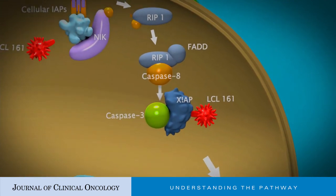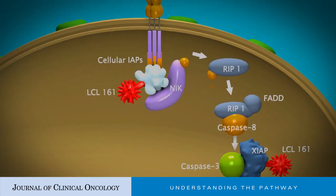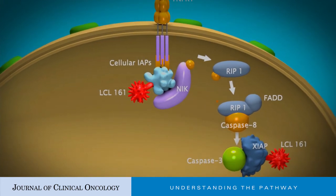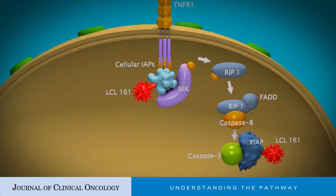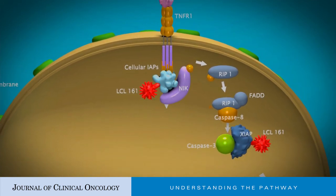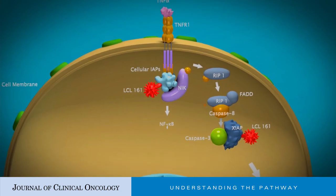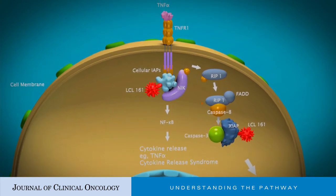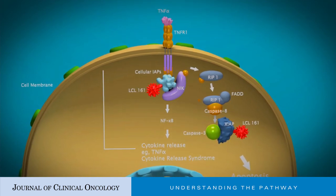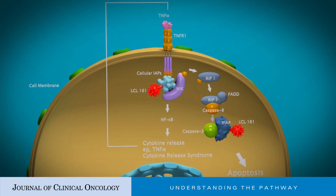In addition, LCL-161 binds to cellular IAP proteins, thereby enhancing their E3-ligase activity, auto-ubiquitination, and proteasomal degradation, which in turn leads to activation of non-canonical nuclear factor kappa-B signaling, upregulation of inflammatory cytokines such as tumor necrosis factor, and TNF-mediated IAP.